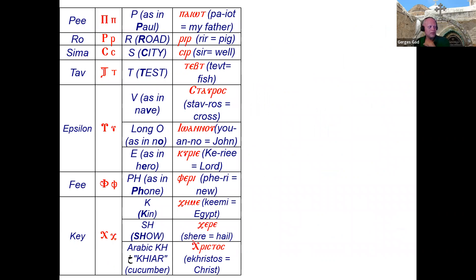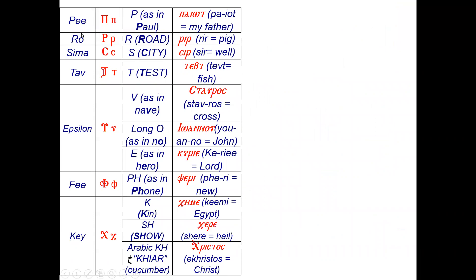Daniel reads the next set: Pi looks like two pillars with a line on top, pronounced P as in 'Paul'; Ro looks like a P, pronounced R like 'road'; Sema looks like a C, pronounced S like in 'city'; and Ta looks like a T with a tail, can work as T as in 'test.'